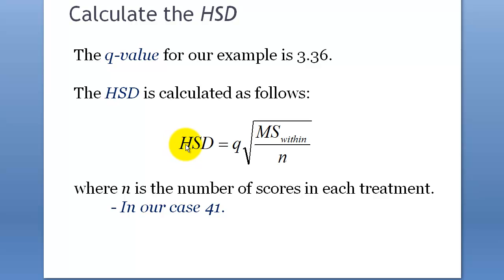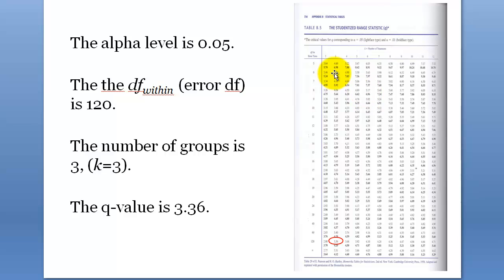This is how you get the HSD value. You need to know Q, and we know the within-group variance. For N, you pick one group and use that number. To find Q, you use this Q table. This axis is degrees of freedom within, and this axis is the number of groups — not degrees of freedom, just the number of groups, so you don't subtract one. In this example, it's three groups and df = 120, giving us Q equals 3.36. Notice the table starts from two groups — with just one group it wouldn't make sense.